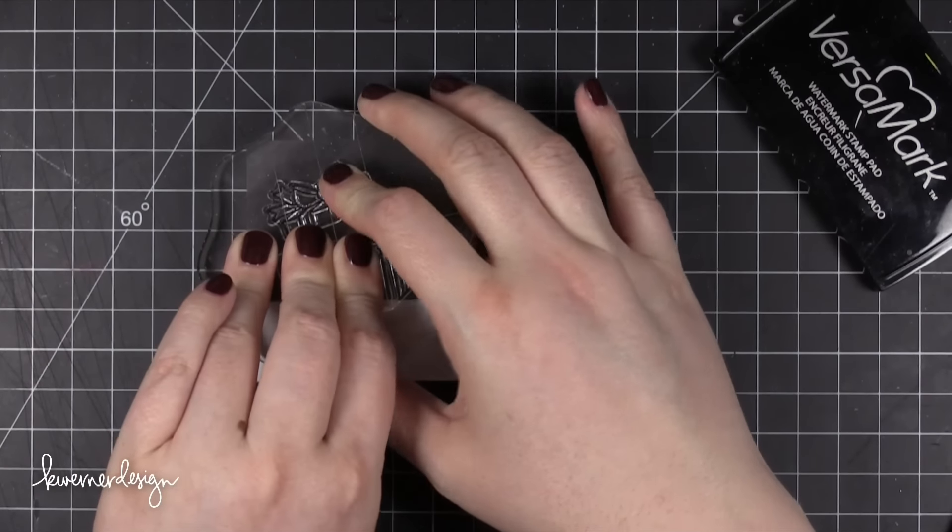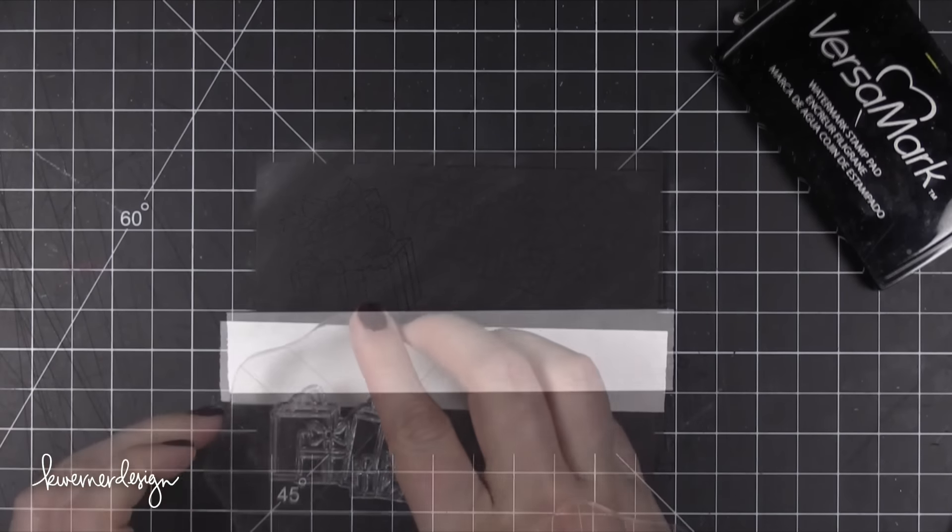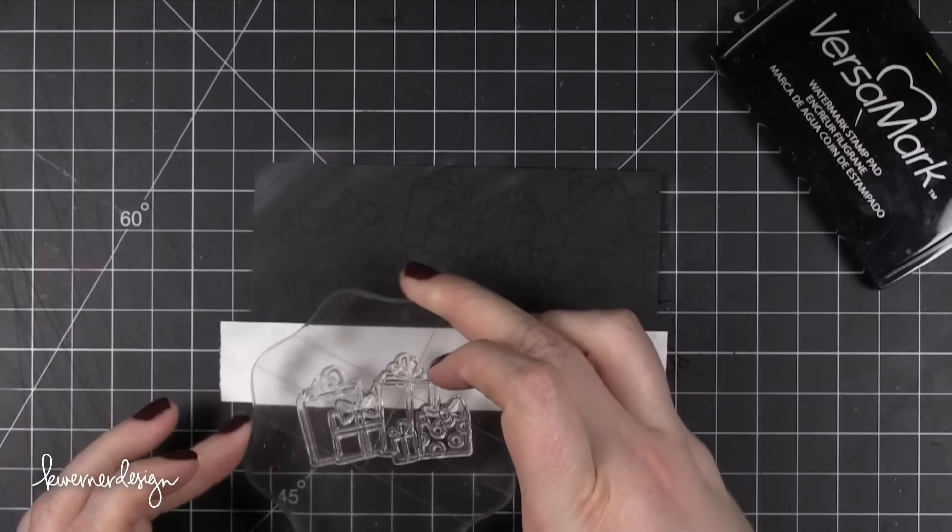Then I took each of the images and stamped them in Versamark ink, creating sort of a random pattern of images. I wanted to make sure all of the areas were filled in.